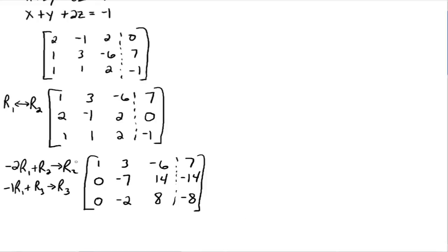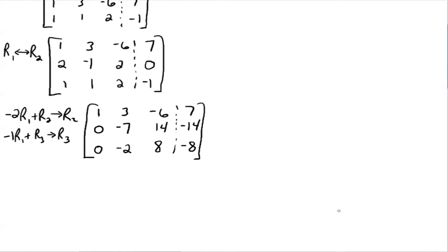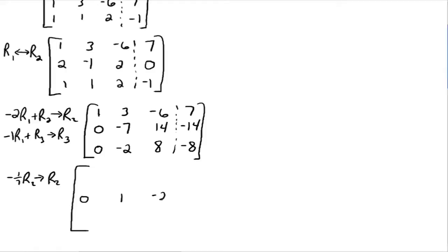All right, the first column is done — the one is there and everything else is zero. Go to the next column and get a one where you'd like it. You'd like this negative seven to be a one. So you do negative one-seventh times row two gives you a new row two: zero, one, negative two, and two.